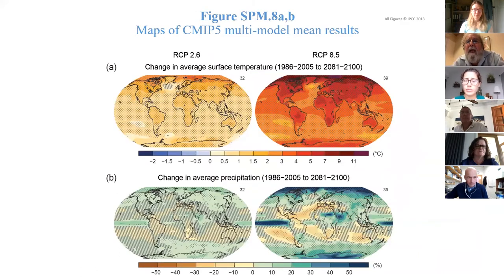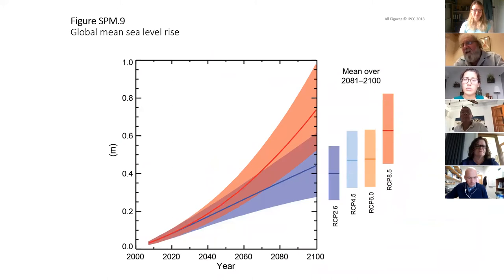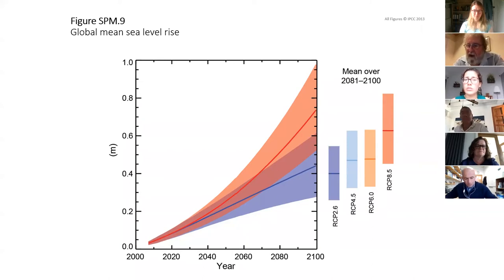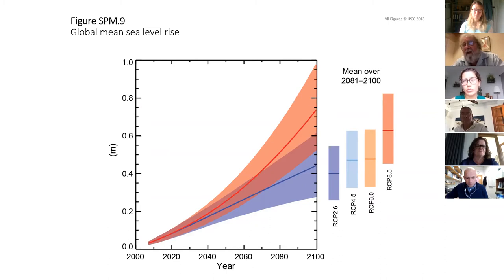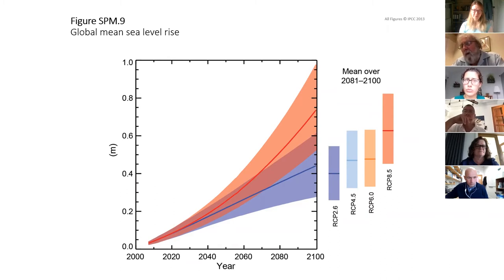In a low emission scenario relative to a high emission scenario, there is far less change in temperature and precipitation. Land areas warm more than oceans, and high latitudes warm more than equatorial regions. Precipitation tends to increase in the equatorial belt and at high latitudes but decrease in the mid-latitudes. On sea level rise, projections range from low emissions scenario RCP 2.6 to high emissions RCP 8.5, driven by thermal expansion of the ocean and melting of mountain glaciers.